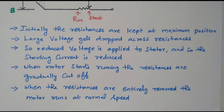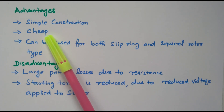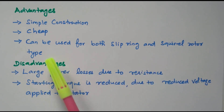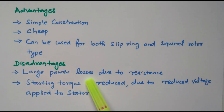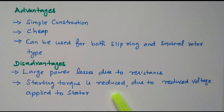Now we will see the advantages and disadvantages of the stator resistance method. The advantages are: it is a simple construction — only 3 sets of resistors are needed — and the cost is very cheap. The resistors can be used for both slip ring as well as squirrel cage types of induction motor. The disadvantages are: large power is lost in the resistors, because initially the maximum resistance position is used and the entire voltage is dropped across the resistor, causing more power loss. Also, the starting torque is reduced because only a reduced voltage is applied to the stator.